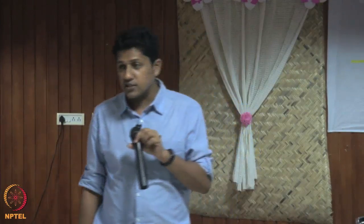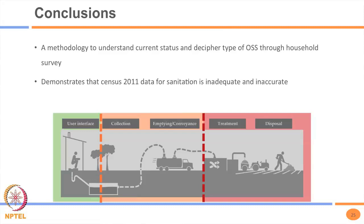In conclusion, through this study we developed a methodology to understand current sanitation status moving beyond census information, and demonstrated that census data on sanitation is not reliable for planning at city and sub-city level. At the all-India policy level a few percentage points may not matter, but at town or ward level planning is very sensitive to the type of information available.